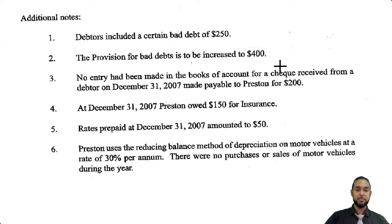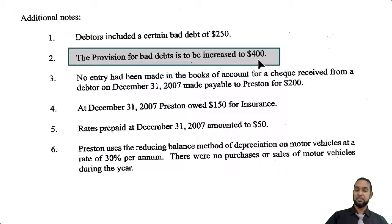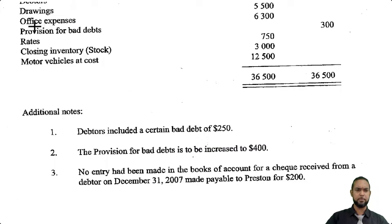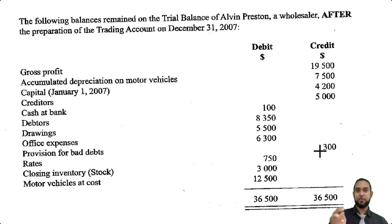The second item says the provision for bad debts is to be increased to $400. Notice carefully — it says increased to $400. So it's not this $400 that's going to go in the income statement; it's the change. We have the existing provision of $300, so the increase to go from $300 to $400 is $100. That is the amount that's going to go in the income statement.